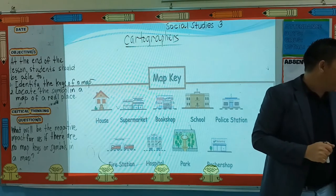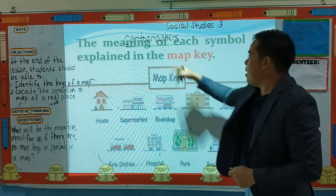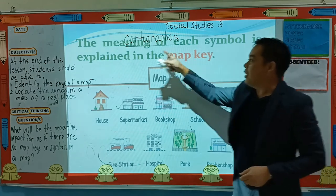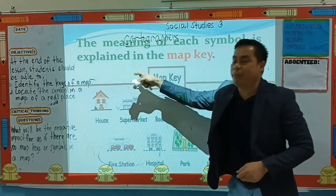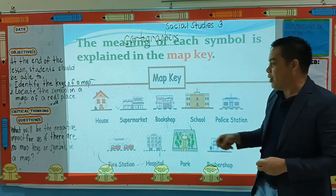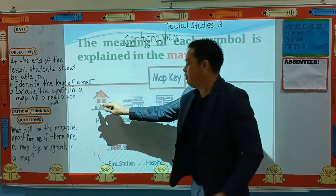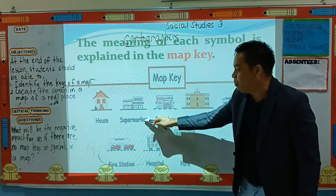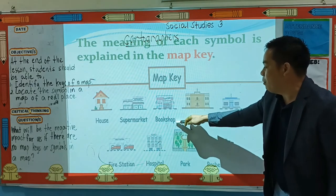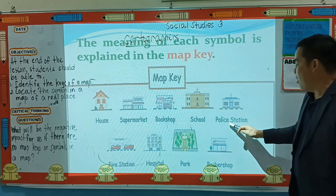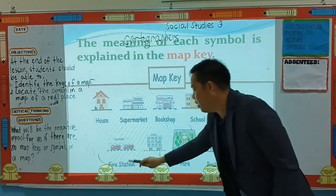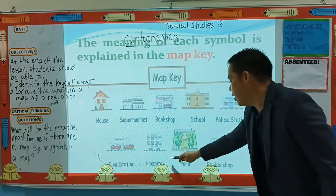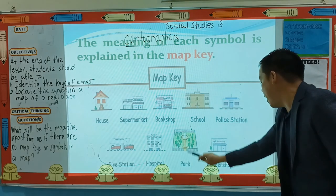These are examples of a map key, children. The meaning of each symbol is explained in the map key. For example: this is a house, this is a supermarket, this is a bookshop, this is a school, this is a police station, this is a fire station — they use the fire truck symbol. Next, the hospital, park, and library.